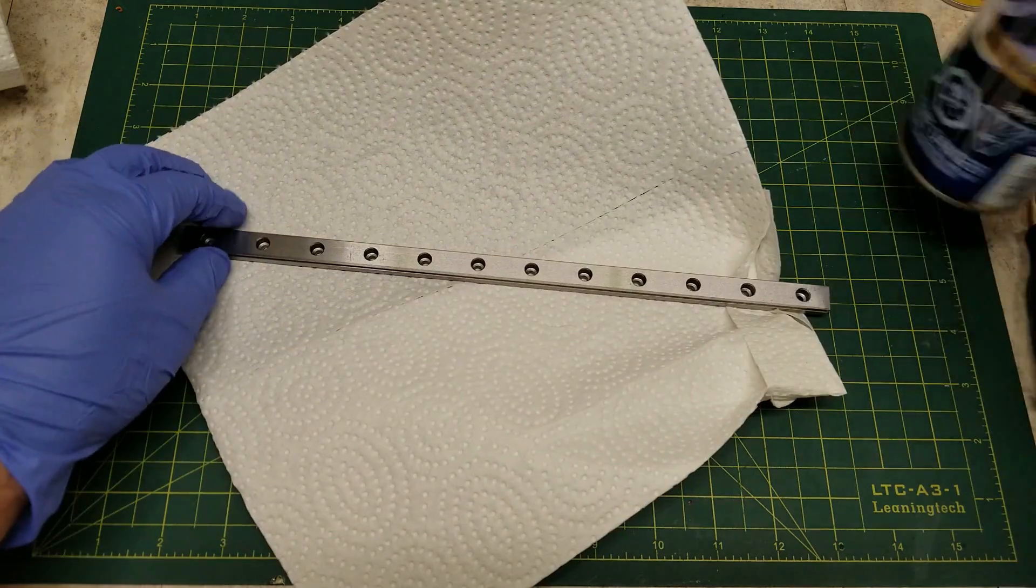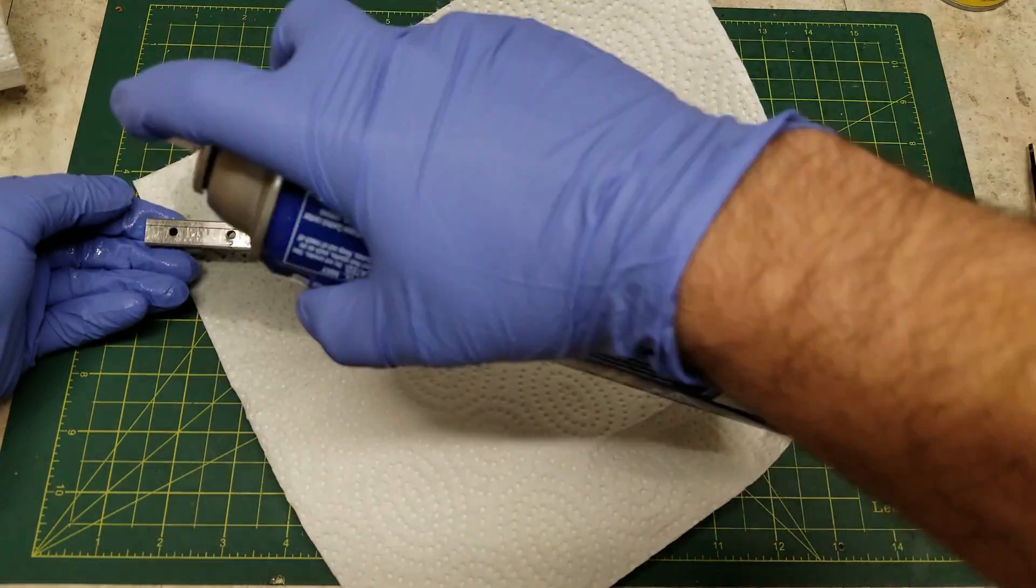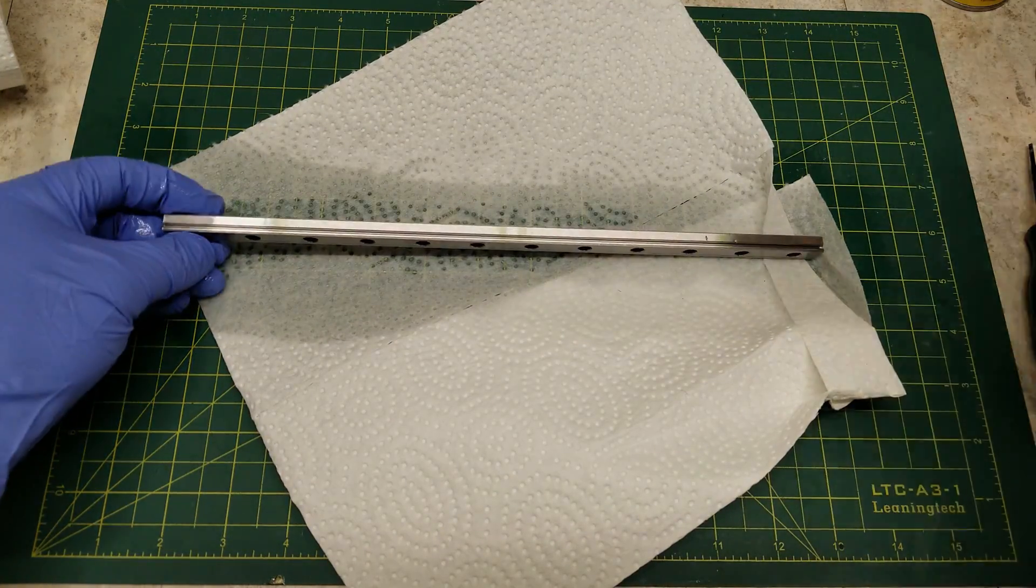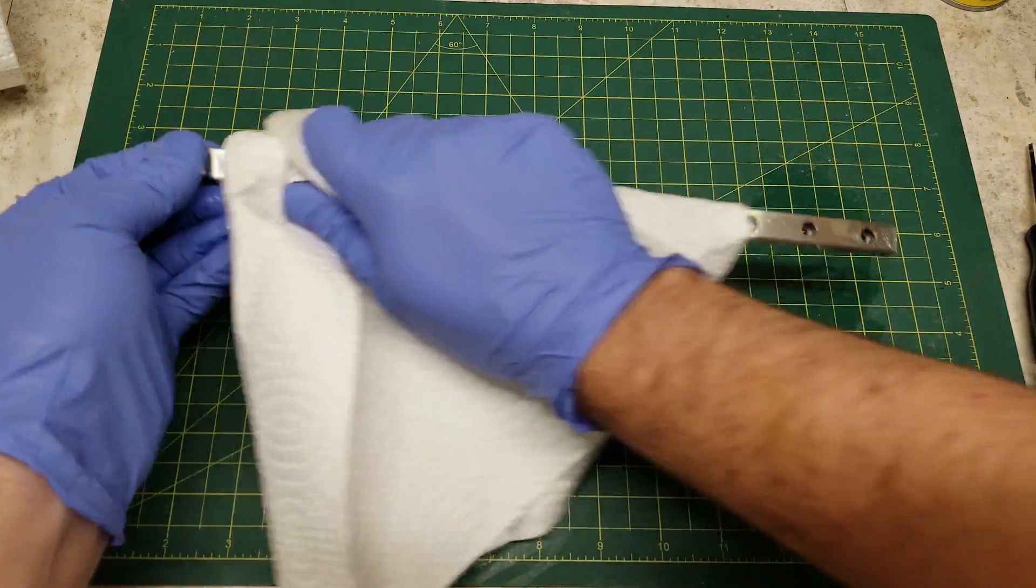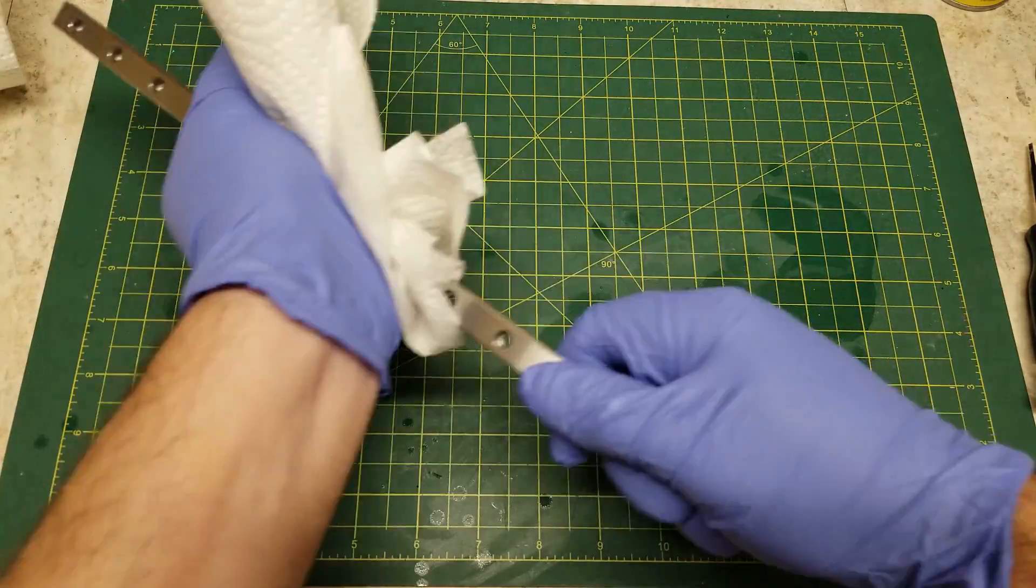The first step is removing any grease, grime, or oil that is already on the rail. You're going to want this rail to be bone dry and perfectly clean when we go to start bluing it. So I use some brake cleaner here to get started. Later on I switch to just using isopropyl alcohol.